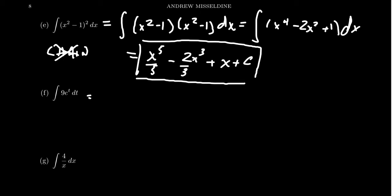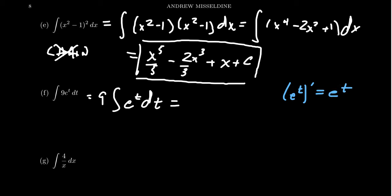The next one: if we want to find the antiderivative of 9eᵗ, I would first take out the constant, so we need 9 times the integral of eᵗ dt. We have to find a function whose derivative is eᵗ. We know that if you take eᵗ and differentiate it with respect to t, you get eᵗ again. So the natural exponential is its own derivative, which also makes it its own antiderivative. We get 9eᵗ, but remember to add the constant, so we get 9eᵗ + C.